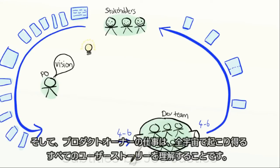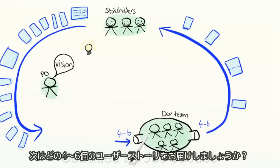And the product owner's job is to figure out, out of all possible stories in the whole universe, which four to six stories shall we deliver next?